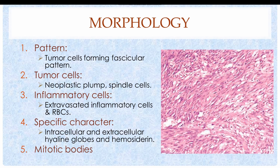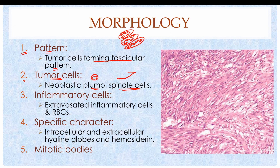Regarding histological features, first is the pattern: the tumor cells form a fascicular pattern, meaning the neoplastic cells are arranged in bundles. Second, the tumor cells in Kaposi Sarcoma are plump or spindle cells — plump meaning round — and the spindle cells are derived from the endothelial cells lining the blood vessels. Third, in addition to the tumor cells, inflammatory cells such as macrophages, plasma cells, and lymphocytes are present, along with extravasated red blood cells.